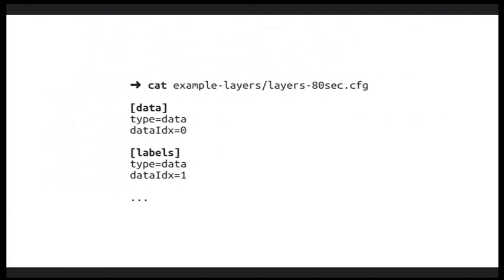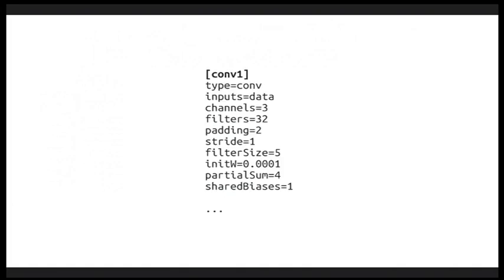To define the architecture of your neural network, you must first write a layer definition file. The first thing you need to add is a data layer. The type data line indicates that this is a data layer. Our Python data provider outputs a list of two elements, the actual image and the label for the image. The line data index 0 indicates that the layer name data is mapped to the image, and data index 1 indicates that this is the label.